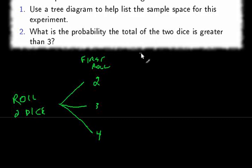The second roll can be a one, a two, or a three, and it doesn't matter what happens on the first roll. So when the first roll is two, the possibilities for the second roll are one, two, and three.